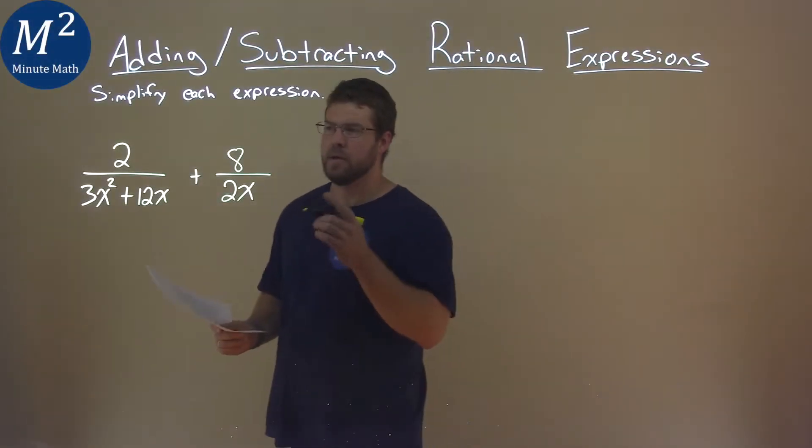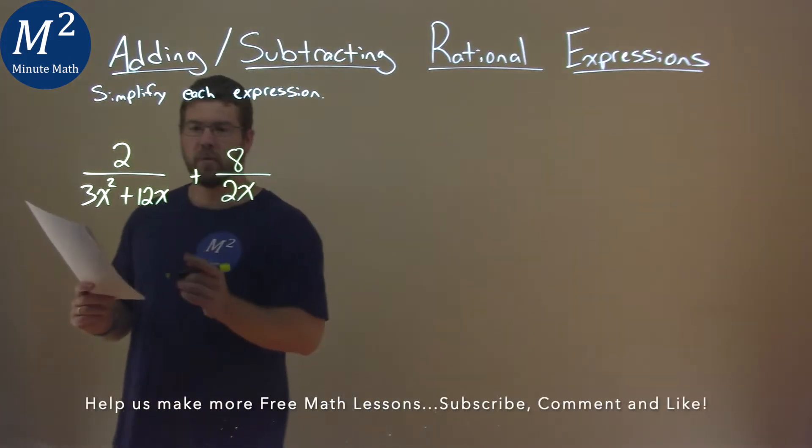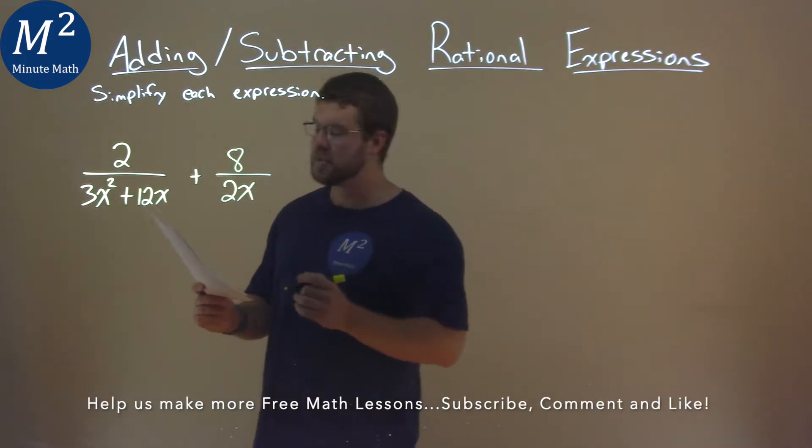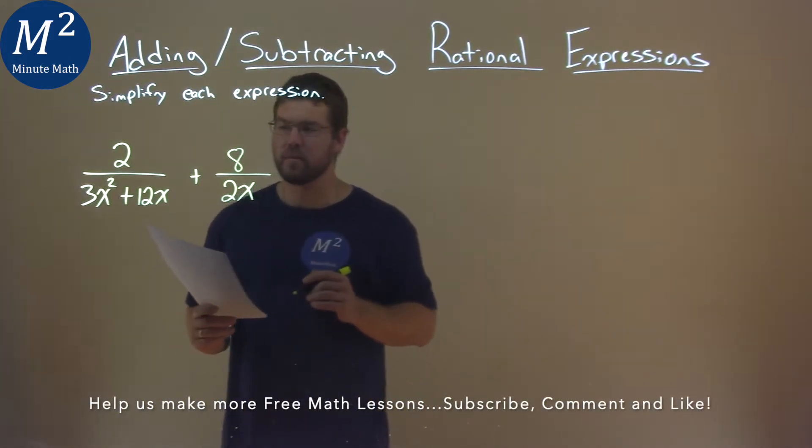We're given this problem: 2 over 3x squared plus 12x plus 8 over 2x, and we've got to simplify this expression.